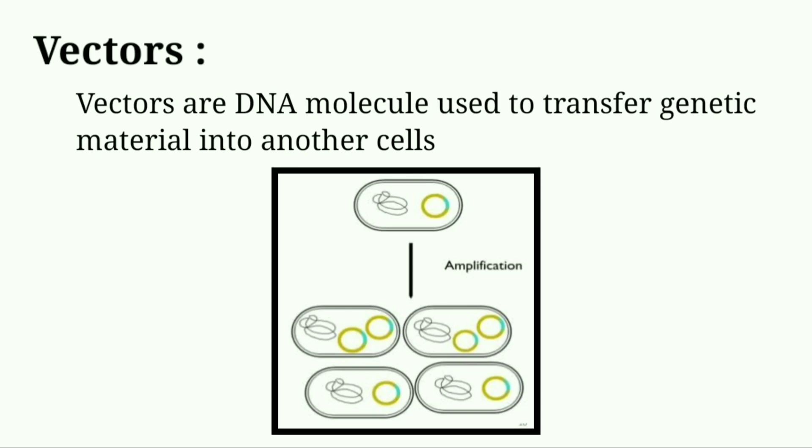Vector is joined with DNA fragment, and many copies of it are made. Foreign DNA fragment is added into the vector. When DNA is amplified, along with the vector, copies of DNA fragment are also obtained.